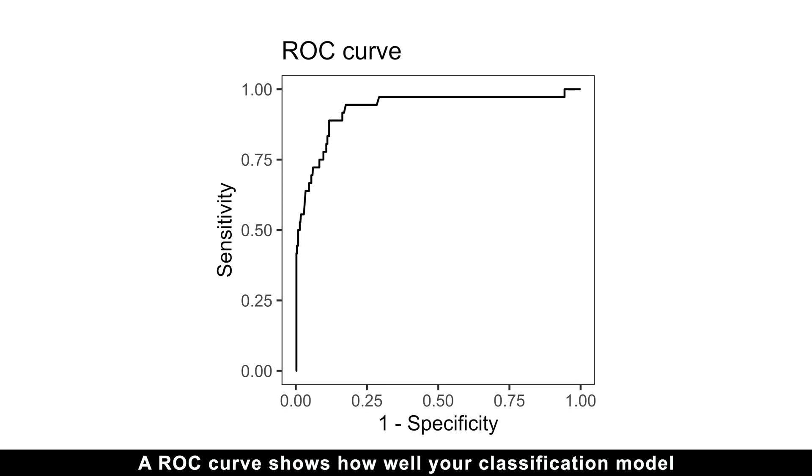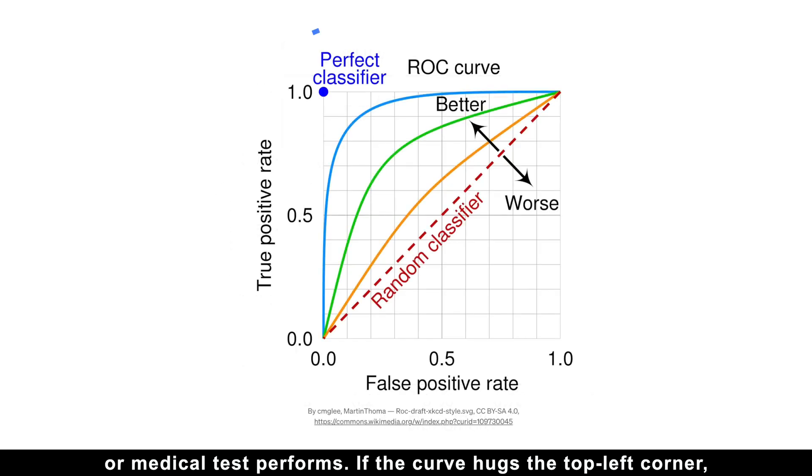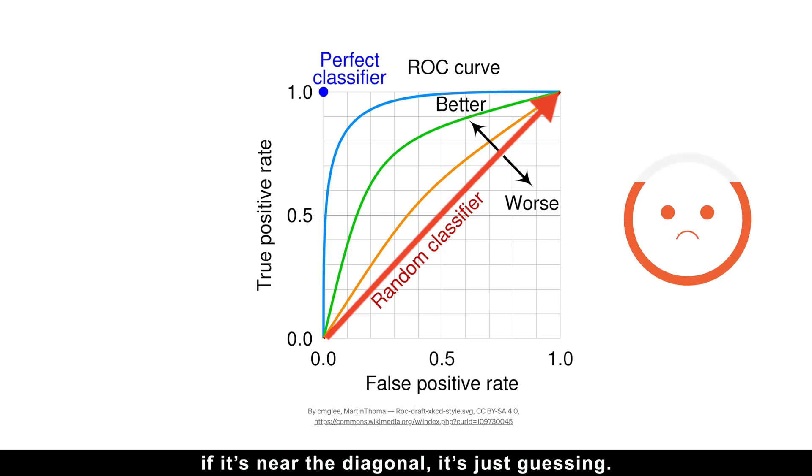A ROC curve shows how well your classification model or medical test performs. If the curve hugs the top left corner, your model is performing excellently. If it's near the diagonal, it's just guessing.